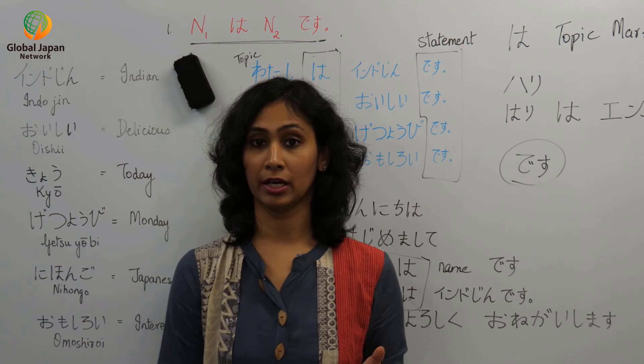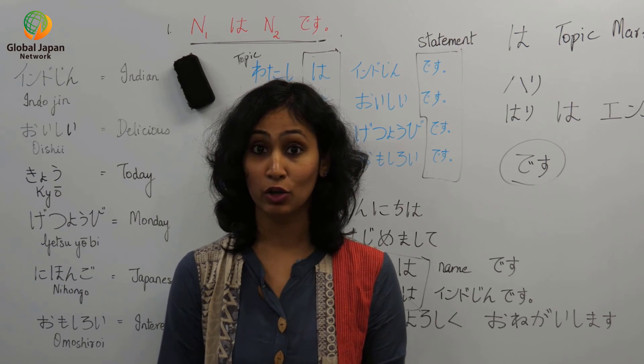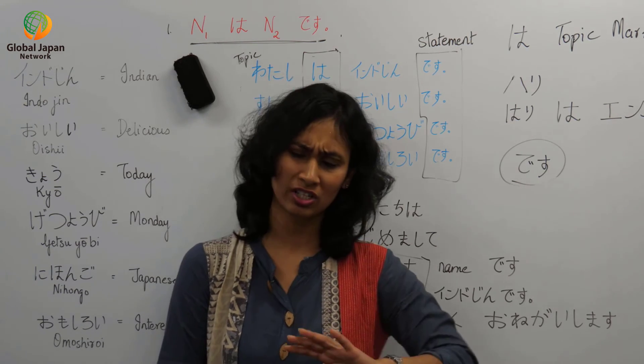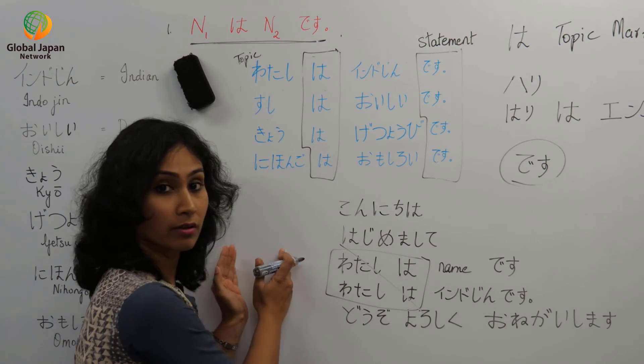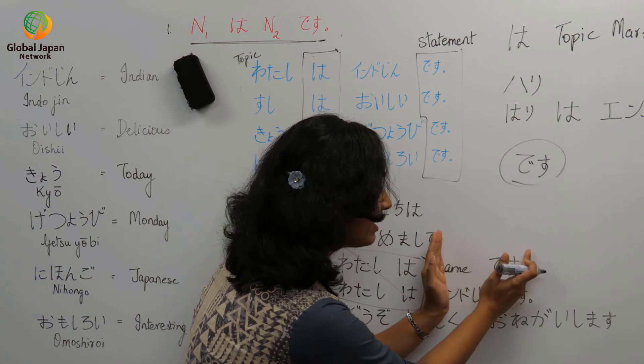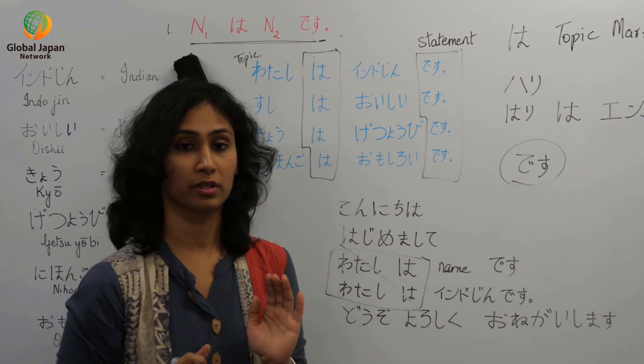Konnichiwa hajimemashite Varsha desu. You need not tell Watashiwa Varsha desu. Just drop Watashiwa. It's okay to drop the subject. Not the verb or the object which follows it.